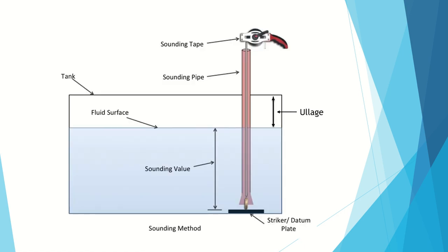Manual sounding is taken by passing this weighted bob down to the tank through the sounding pipe. This you can see, this is a sounding pipe. It should be passed into the sounding pipe until it reaches the bottom of the tank.